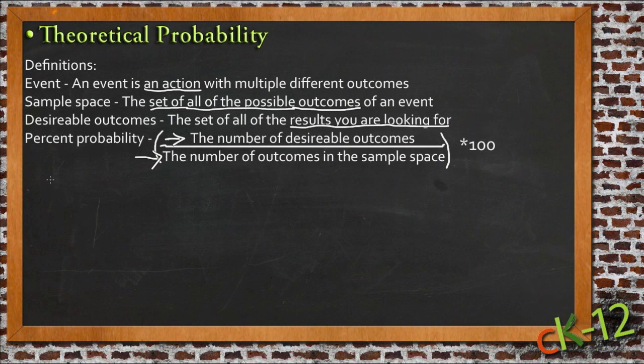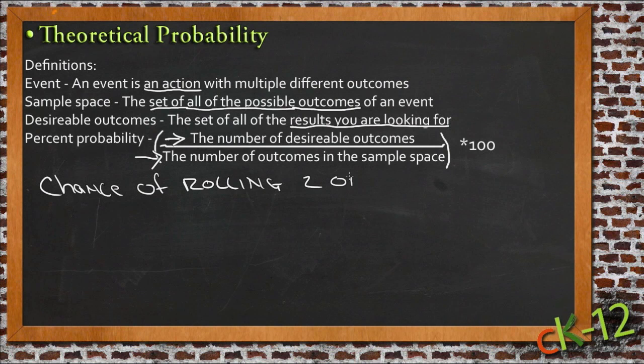So if we had, for our chance, let's say the chance of rolling a 2 on a 6-sided die, well then the number of desirable outcomes would be just 1, because there's only 1, number 2. And then the number of outcomes in the sample space would be 6, because there's 6 possibilities on that 6-sided die.